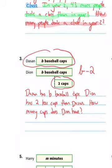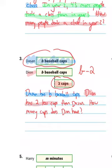Breaking it down: the unknown amount is Dasan's B baseball caps, so the first sentence says he had B baseball caps. Then we know Dion must have two fewer because it's taking two away, so the second sentence says Dion has two less caps than Dasan. Finally, the question: how many caps does Dion have?